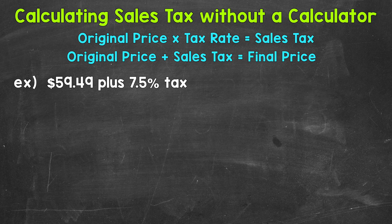Let's jump into our example where we have $59.49 plus a sales tax rate of 7.5%. The first thing that we need to do is calculate how much sales tax we will be paying. We do this by multiplying the price by the tax rate.